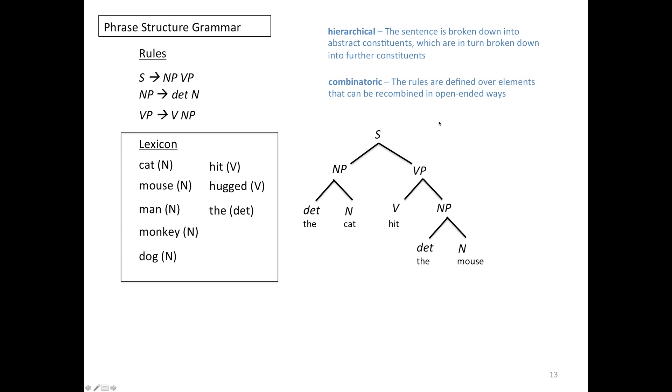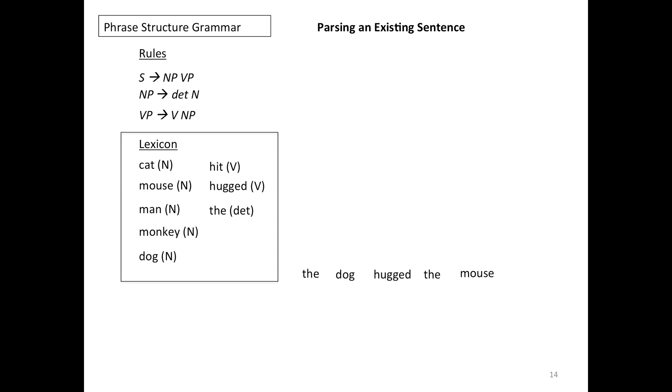Also you can see from the rules that they are combinatoric. What that means is that the rules are defined over elements that can be recombined in open-ended ways. So I formed the sentence the cat hit the mouse. I could have formed a number of other sentences such as the monkey hugged the man. There are many sentences that with these rules these elements can be recombined to produce a number of different sentences.